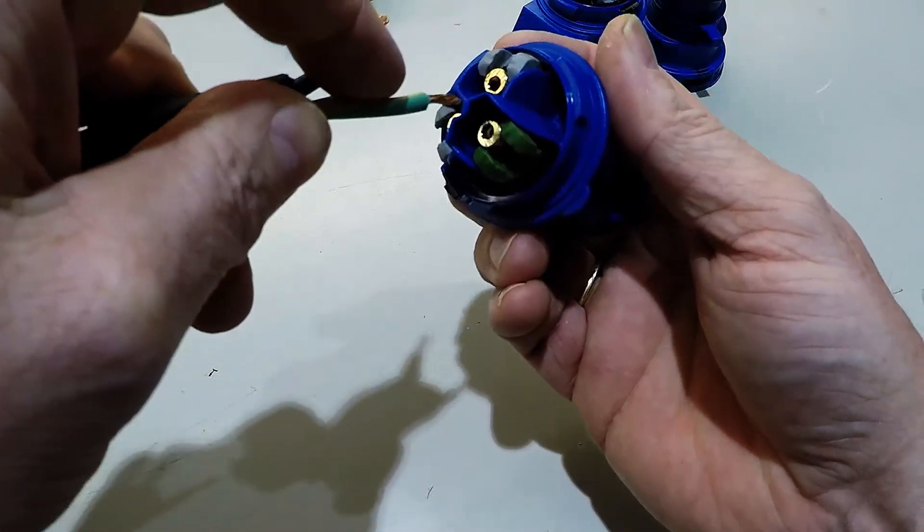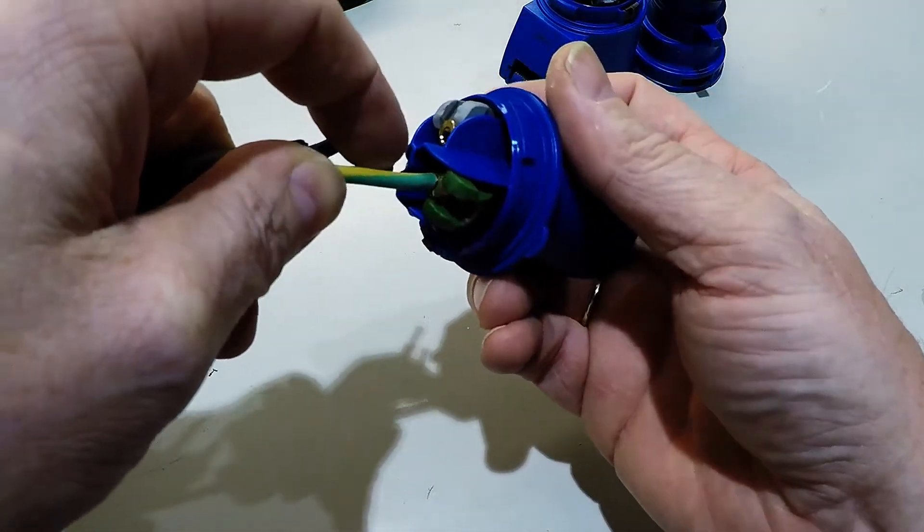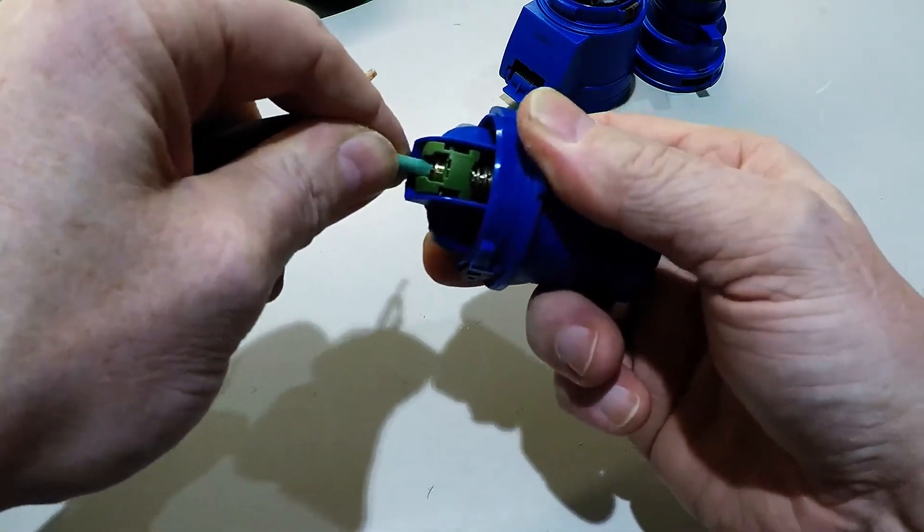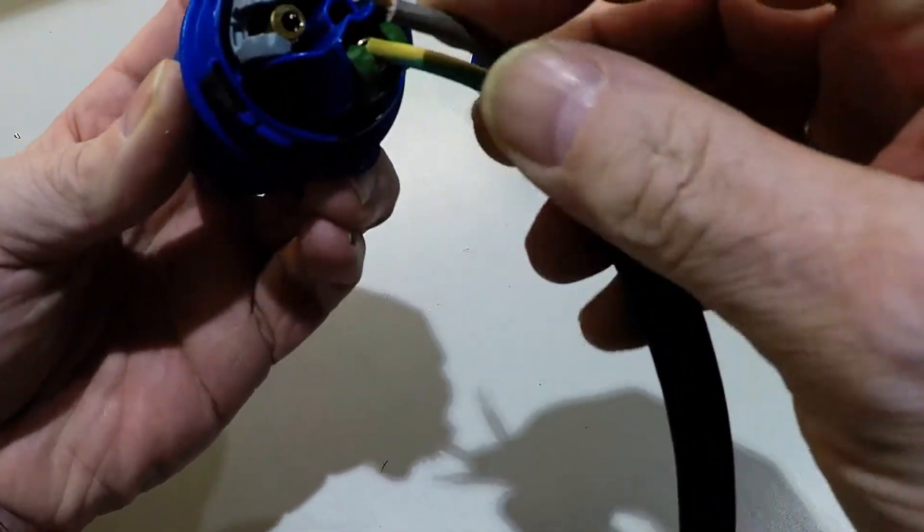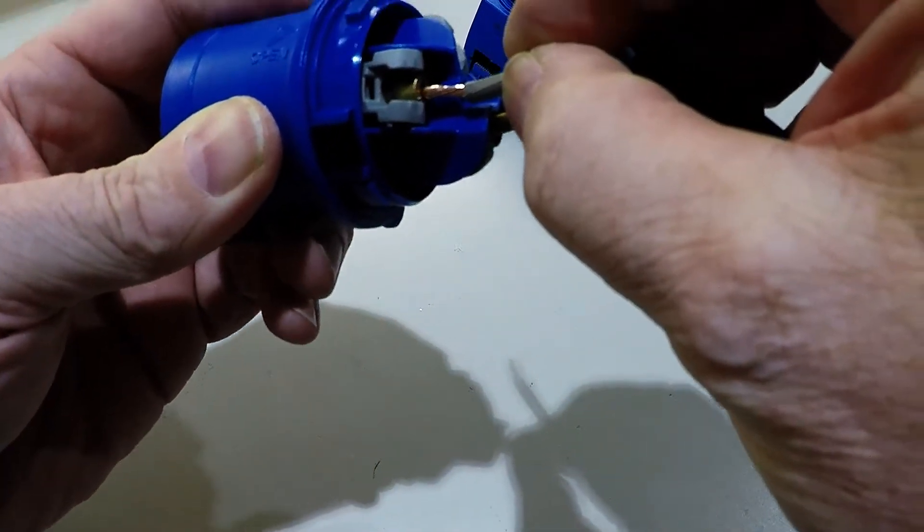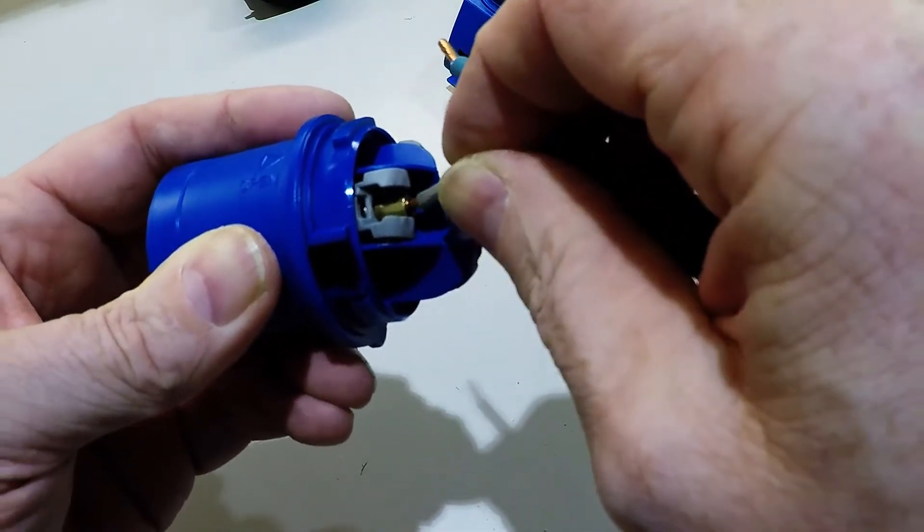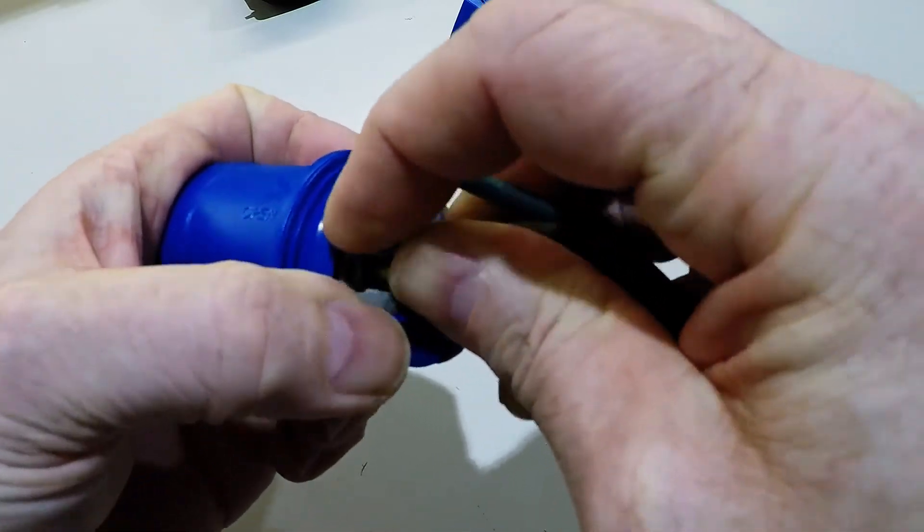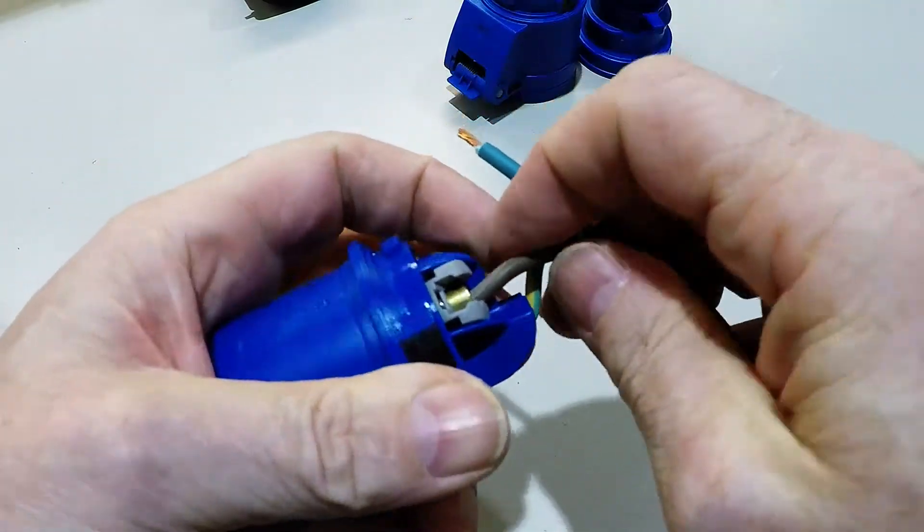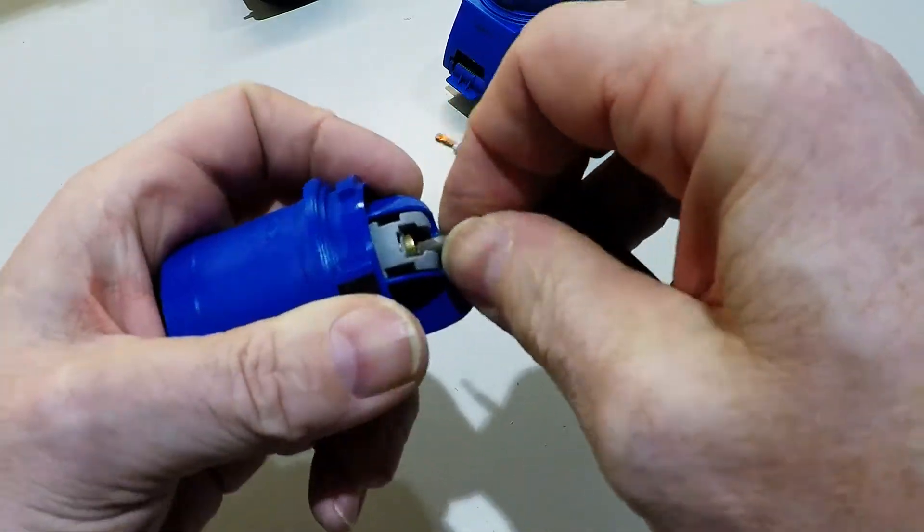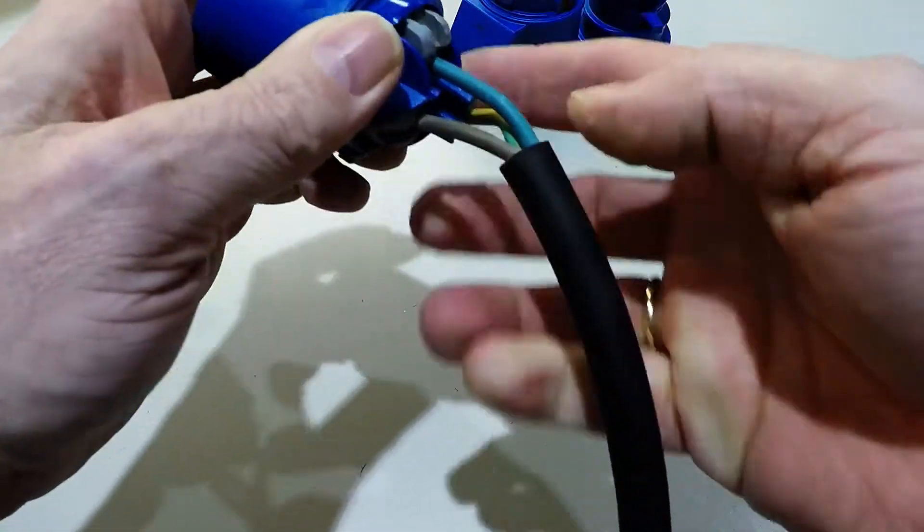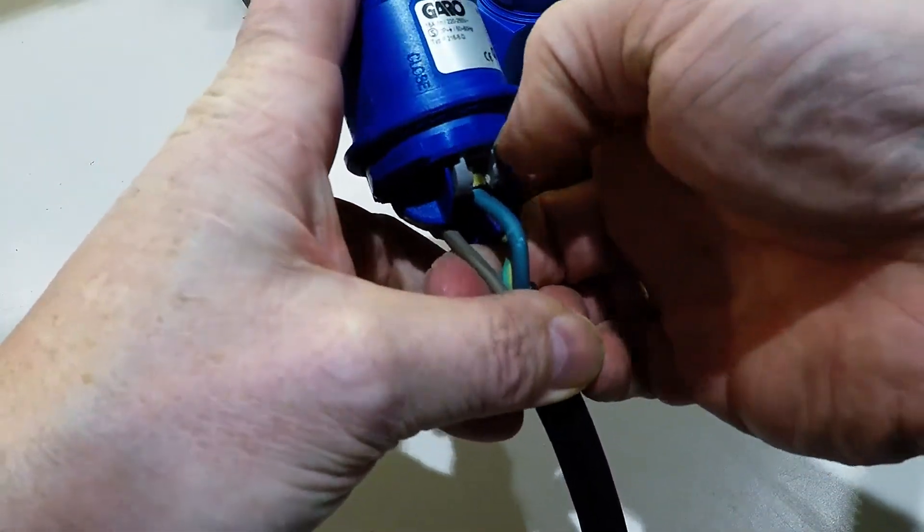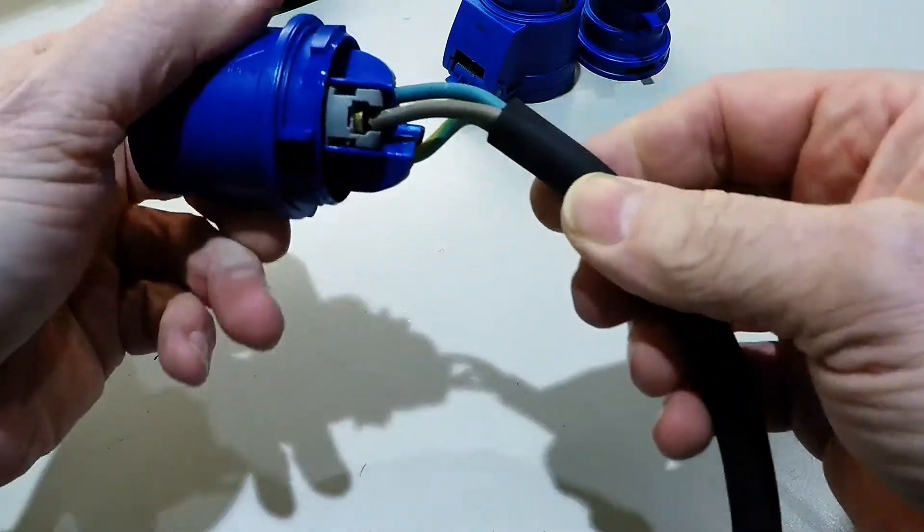And, as this is a screwless system, you just install it like this and then spring loaded. Clever solution. Here we go. Just poke it in the hole like this. Make sure every cord is inside. And then, there we go. And the blue one.